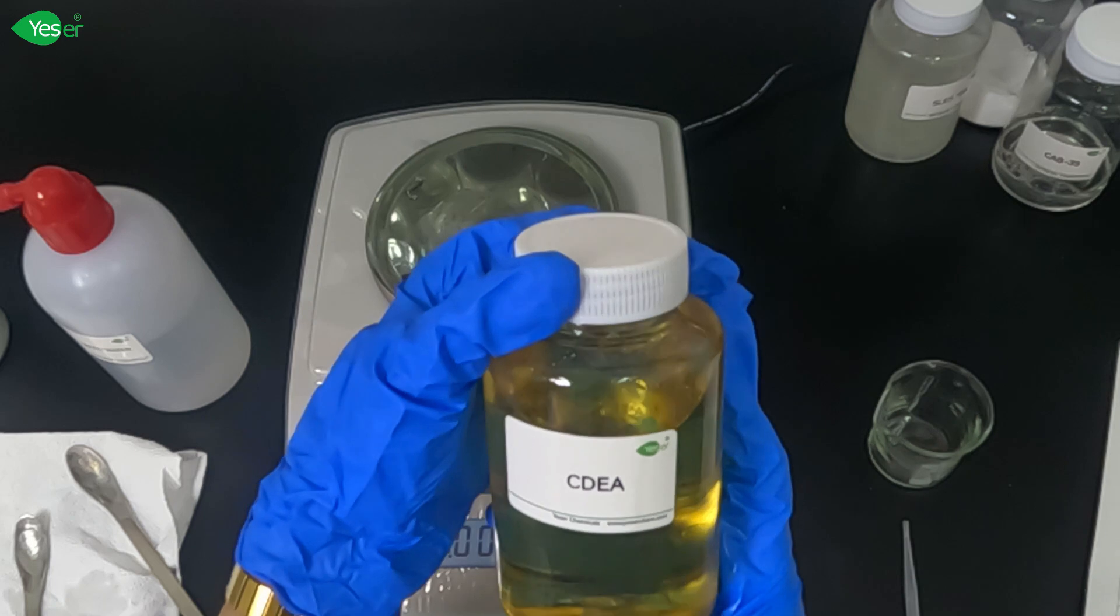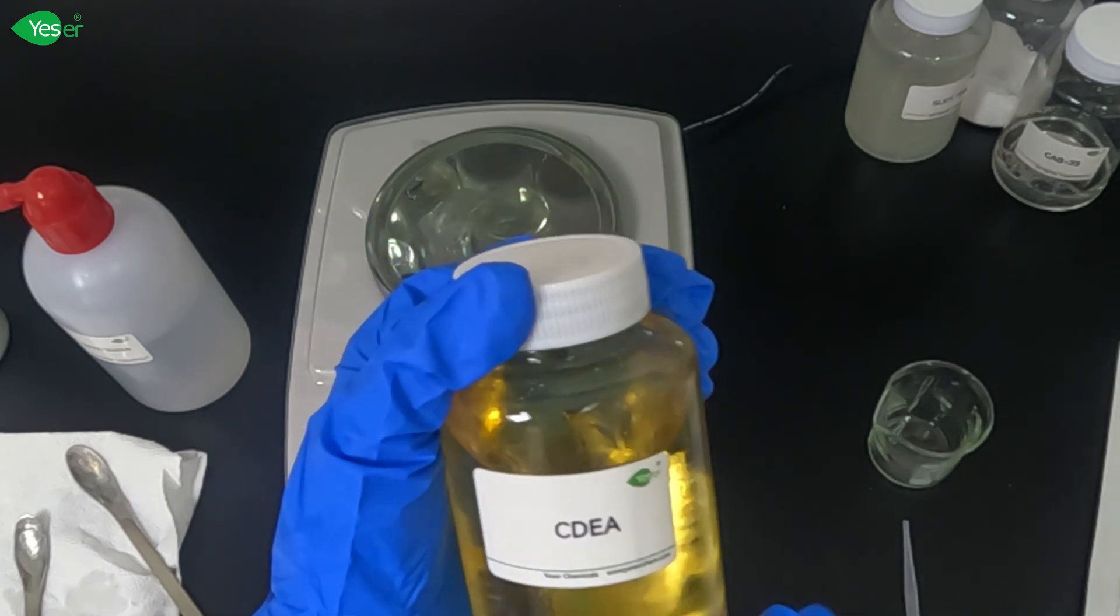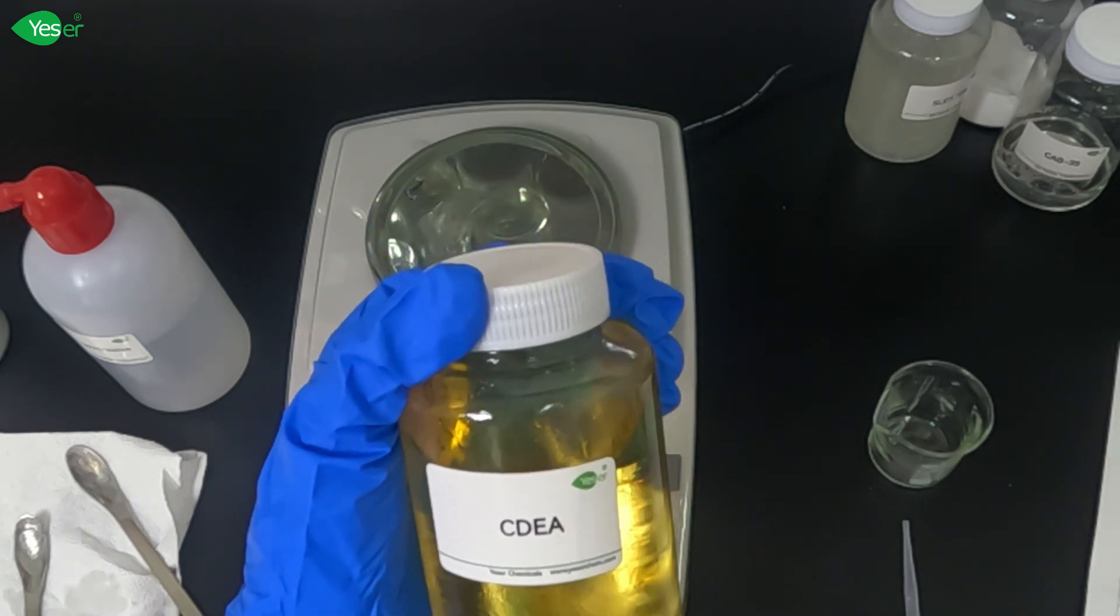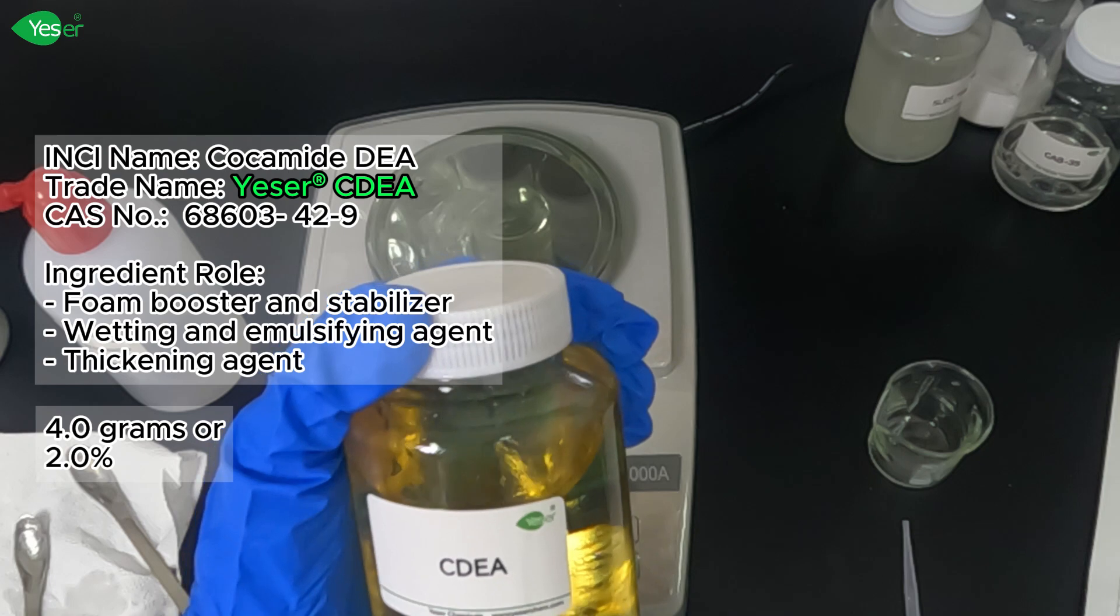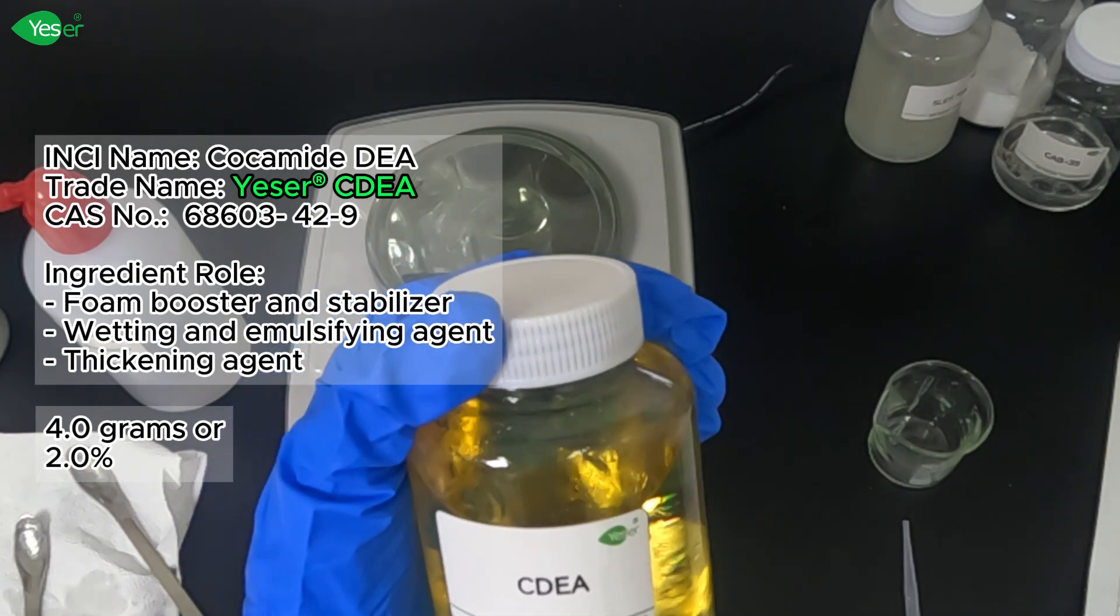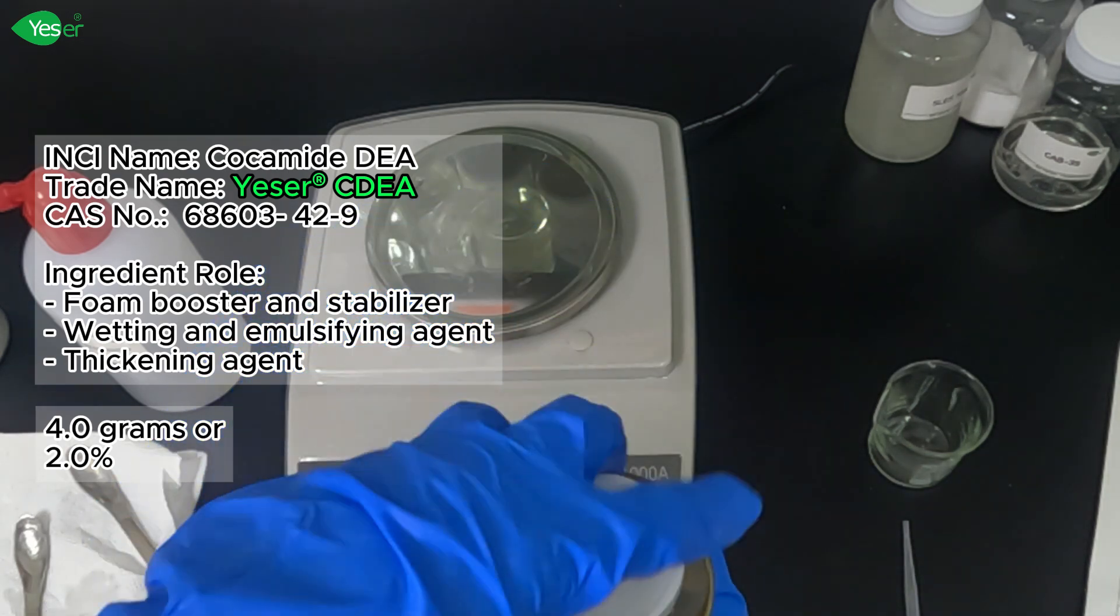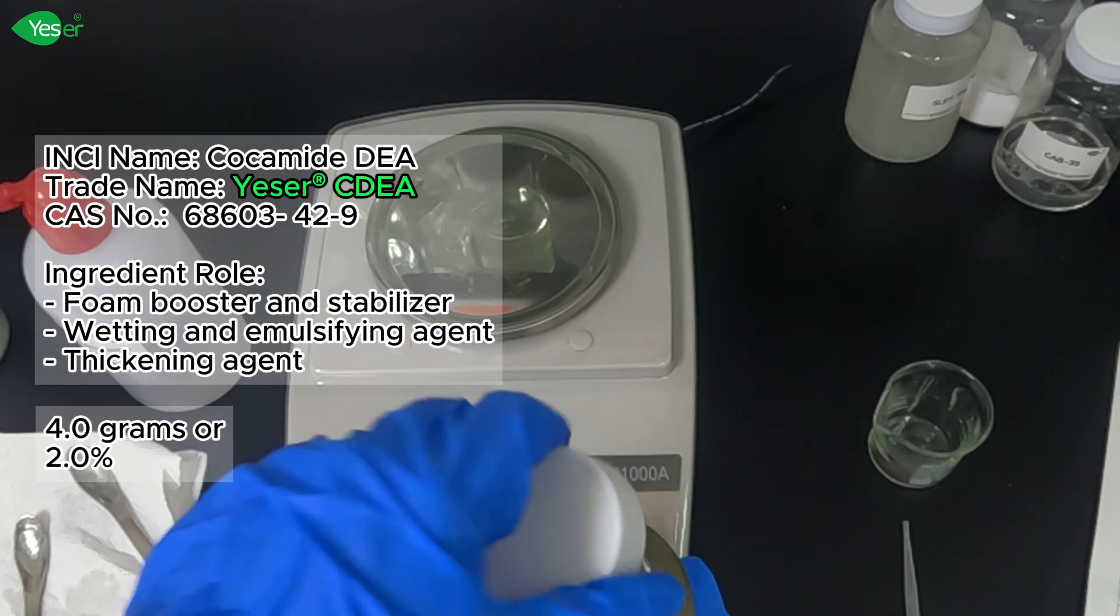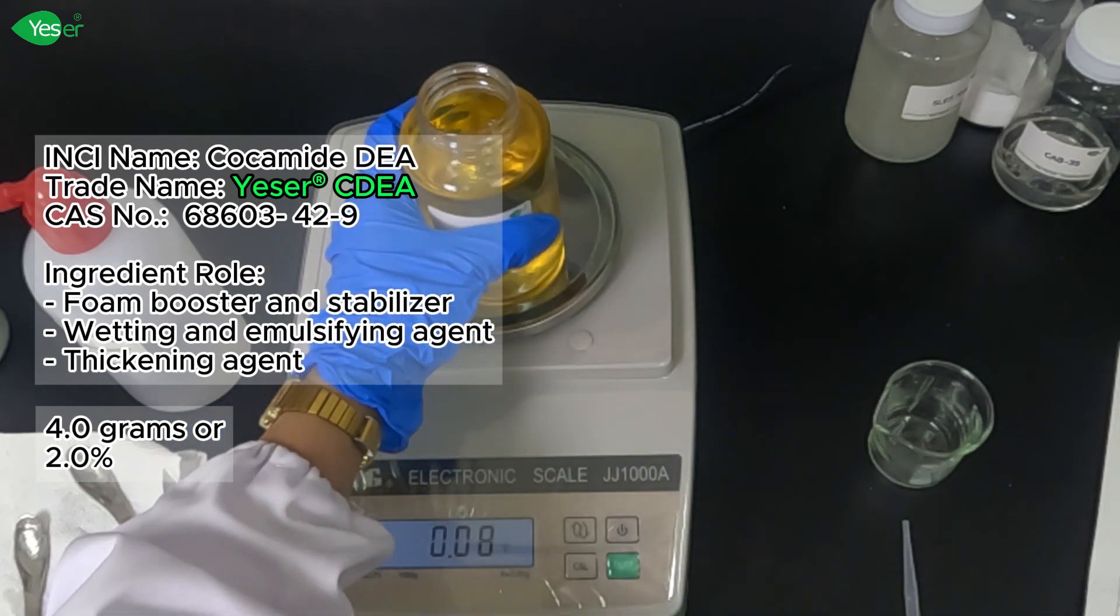Finally, in this phase, we will add CDEA. This is a foam booster and stabilizer. It also helps to thicken the body wash, giving it that luxurious feel that consumers love. We're going to add 4 grams of this, 2% for our formulation.